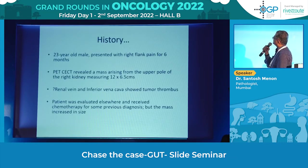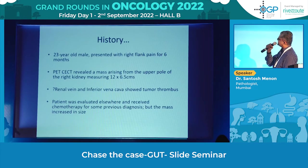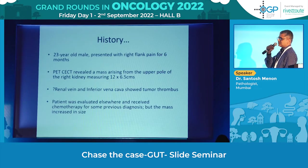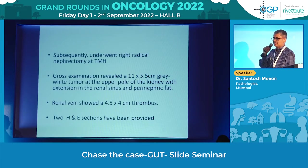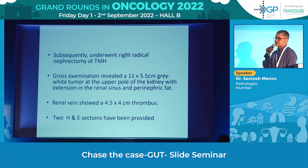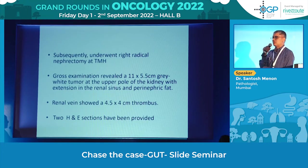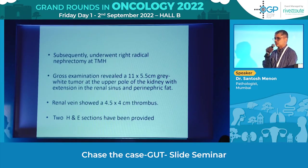Moving on to the second case: a 23-year-old male who presented with right flank pain for 6 months. PET-CT revealed a mass arising from the upper pole of the right kidney, 12 centimetres, with renal vein and inferior vena cava showing tumour thrombus. So this is a very young patient with a renal mass with IVC and renal vein thrombus. The patient was evaluated elsewhere, received some chemotherapy, but the mass increased in size and was referred to TMH. He had three biopsies — the first showed only hyalinized tissue, the second some small round cells with hyalinized tissue, and the third also predominantly hyalinized and desmoplastic tissue.